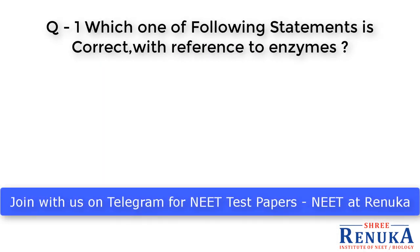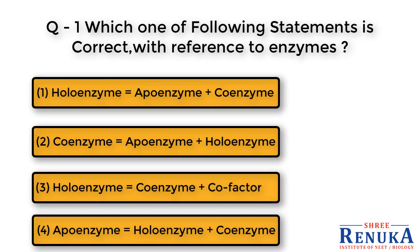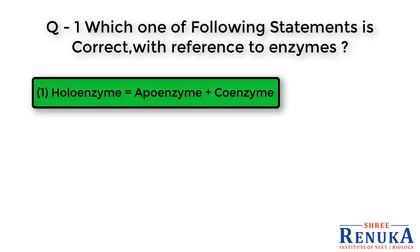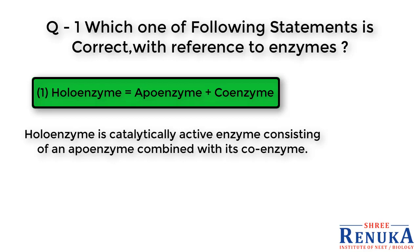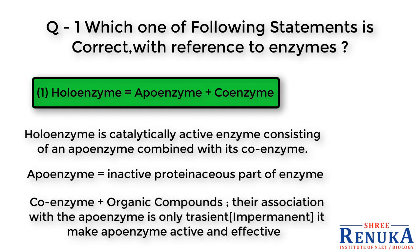Question number 1: Which one of the following statements is correct with reference to enzymes? Option A, holoenzyme = apoenzyme + coenzyme, is true. As we know, holoenzyme is a catalytically active enzyme consisting of an apoenzyme combined with its coenzyme. Apoenzyme is the active proteinaceous part of the enzyme, and coenzyme is the organic compound whose association with the apoenzyme is only transient — meaning impermanent. It makes the apoenzyme active and effective. So our answer is holoenzyme = apoenzyme + coenzyme.